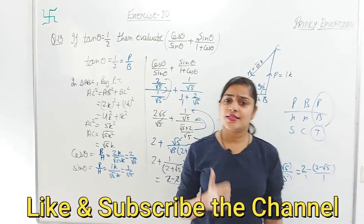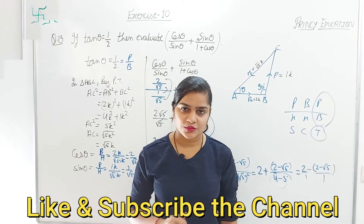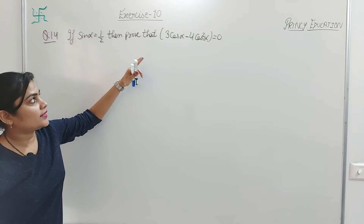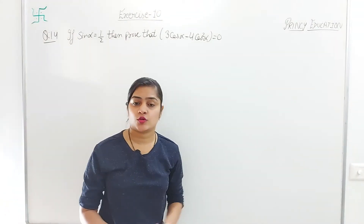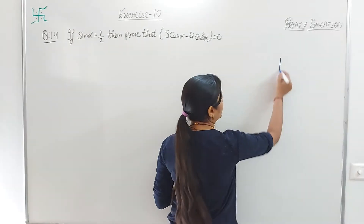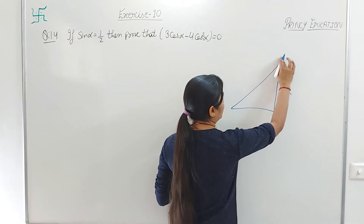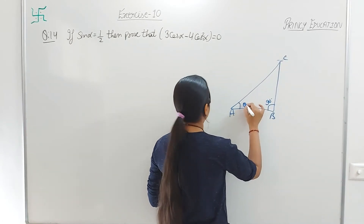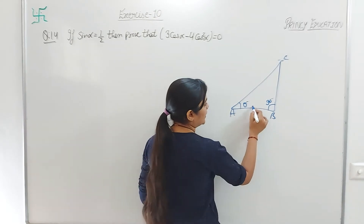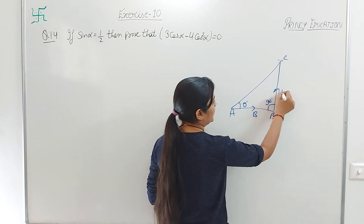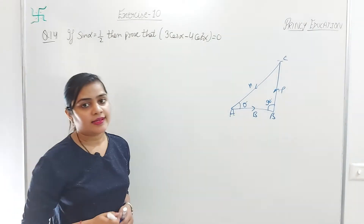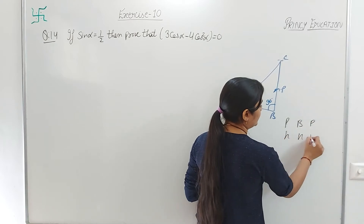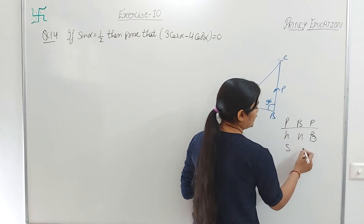If you understood, please like and comment. Now question number 14: given sin α = 1/2, prove that 3 cos α − 4 cos³ α = 0. Draw a right angle triangle ABC with angle 90°, and angle α. For angle α, this is the base, this is perpendicular, and this is hypotenuse. Sin α is given, using the formula: Pandit Badri Par Saad Har Har Bole Sona Chandi Tole.